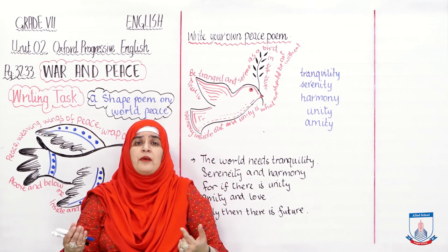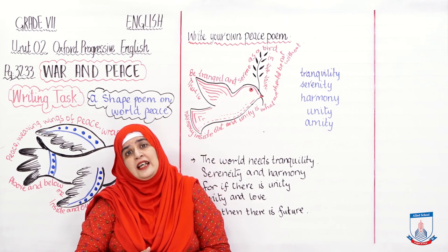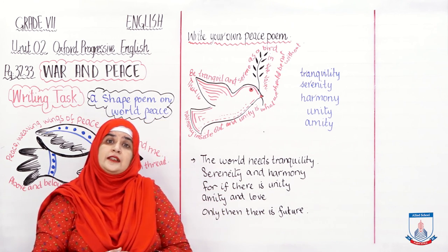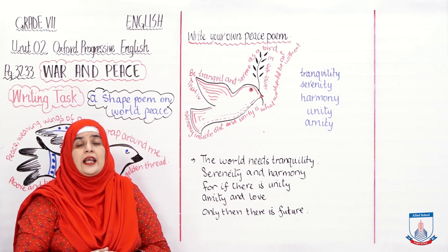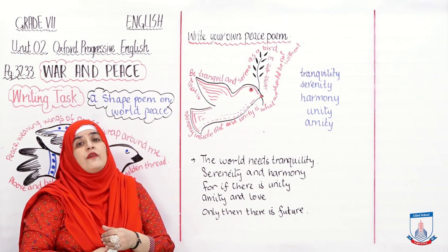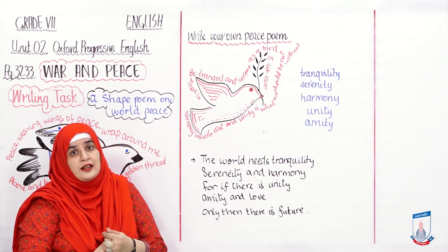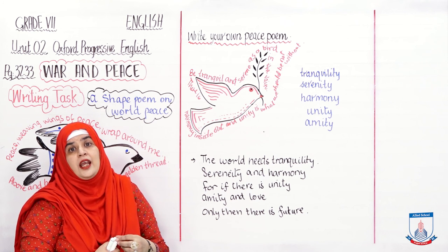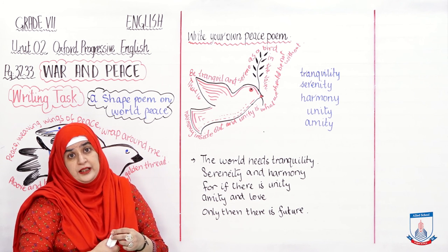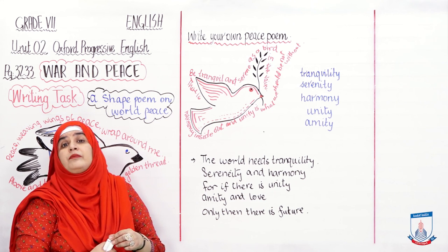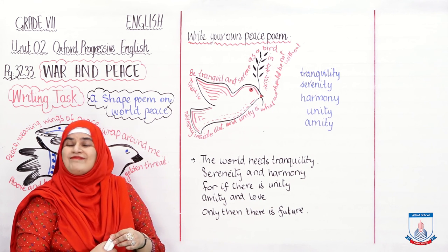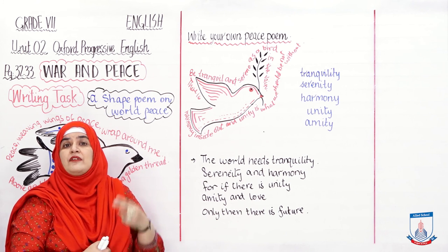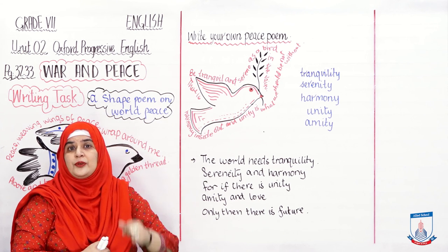Quick recapitulation karte hain aaj ki lesson ki. Aaj humne kya — Unit 2, War and Peace — aur uska ek tha writing task. Aur woh writing task aapse demand kar raha tha ke aap ek shape poem likhen, based on peace, and draw a dove. This is what I have done for you — given you two examples.